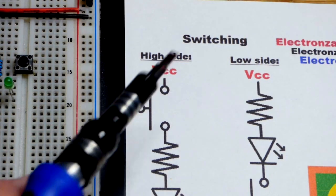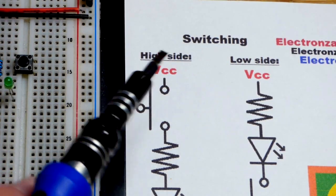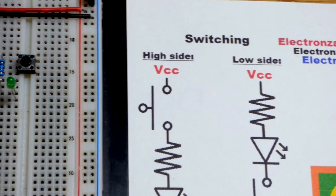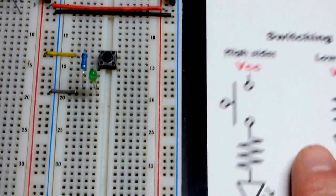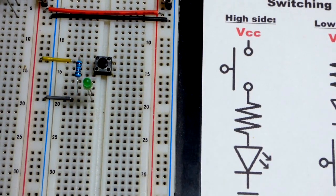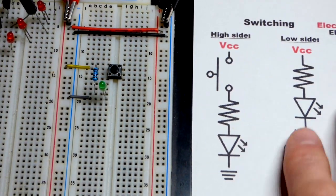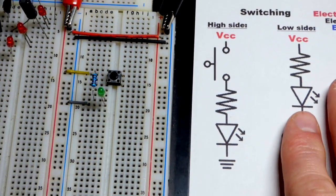In this video we're just going to take a quick look at high side switching versus low side switching. So normally you see this schematic for a switch with a LED and protective resistor load right there.